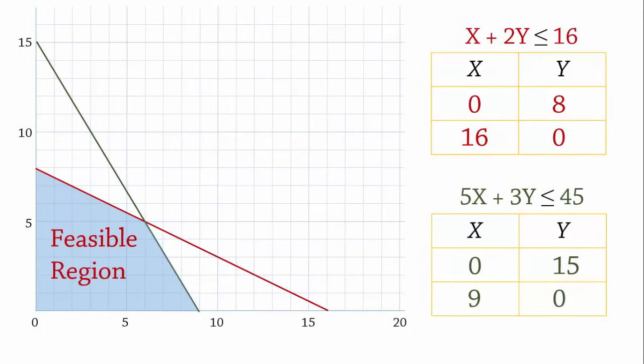In particular, the optimal or best solution will occur at an extreme point or corner point of the feasible region. These are the corner points for the feasible region. Let's label them 1 to 4. The optimal solution to this linear programming problem will occur in at least one of them.